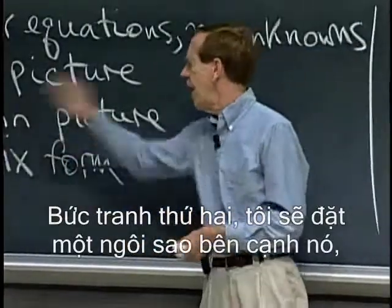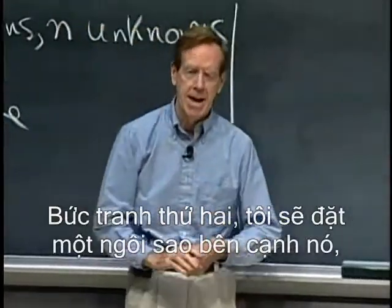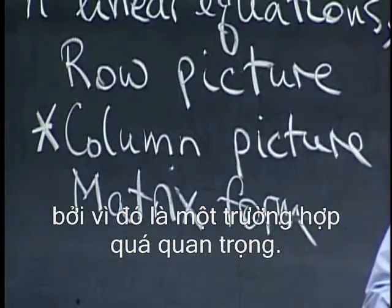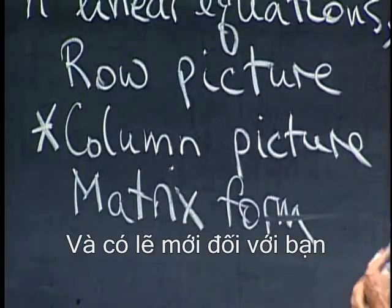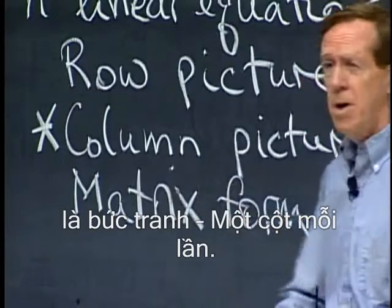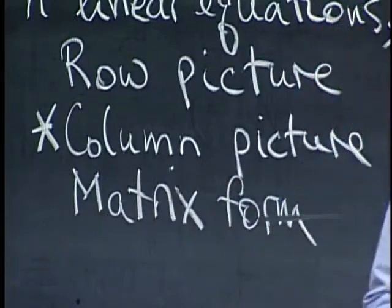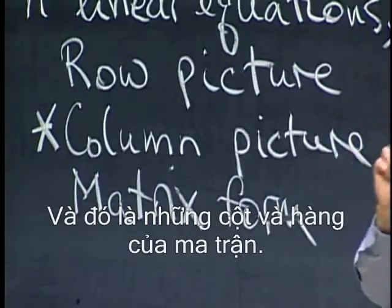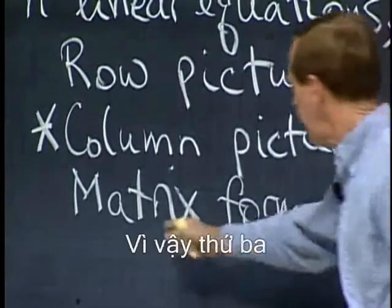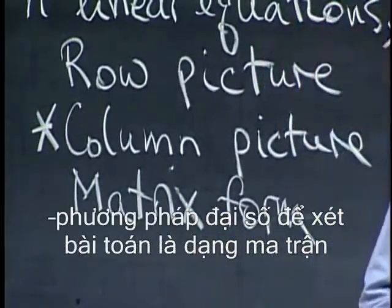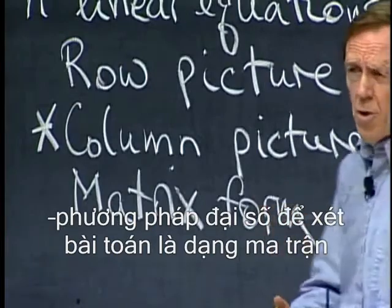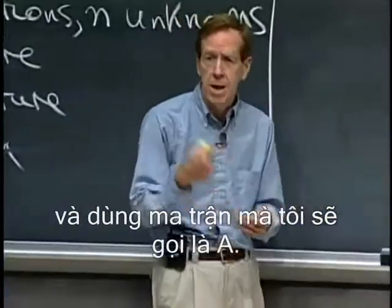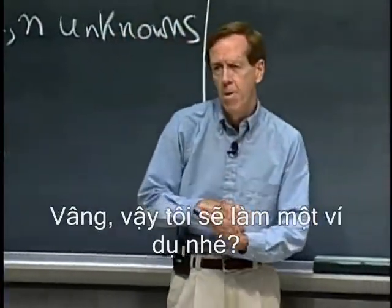The second picture, I'll put a star beside that, because that's such an important one. And maybe new to you is the picture a column at a time. And those are the rows and columns of a matrix. So the third, the algebra way to look at the problem is the matrix form using a matrix that I'll call A.